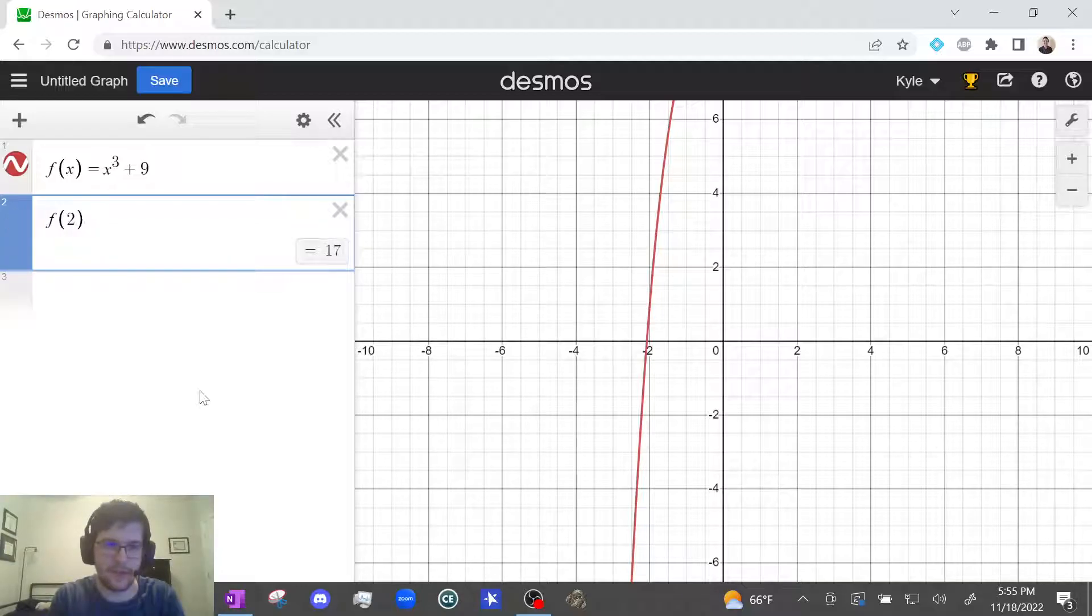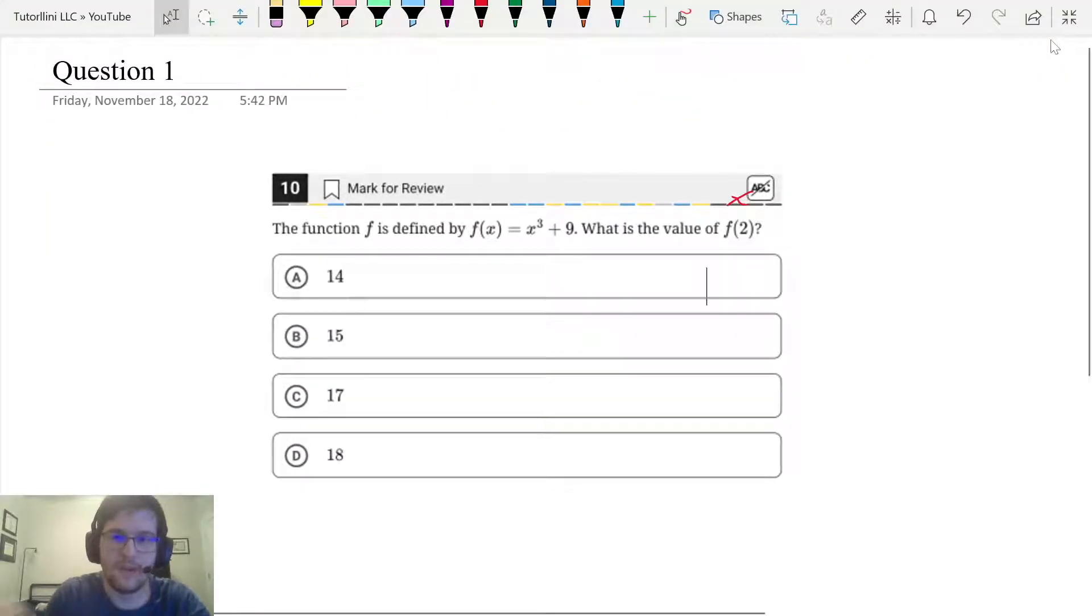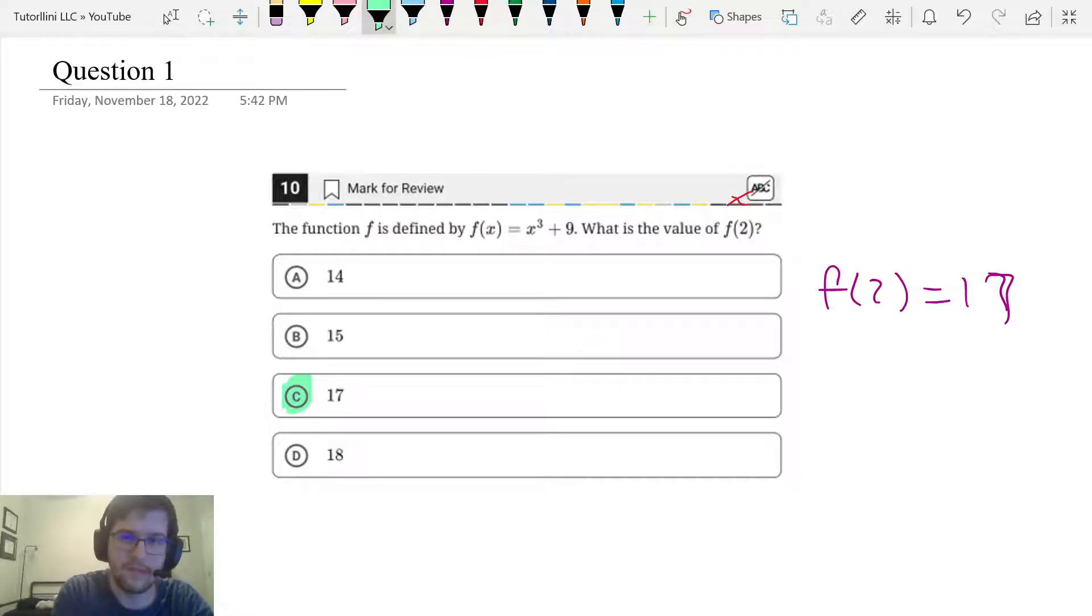Type in f of 2 and it tells me f of 2 is 17. So f of 2 equals 17 and my final answer is C. Great. Let's move on.